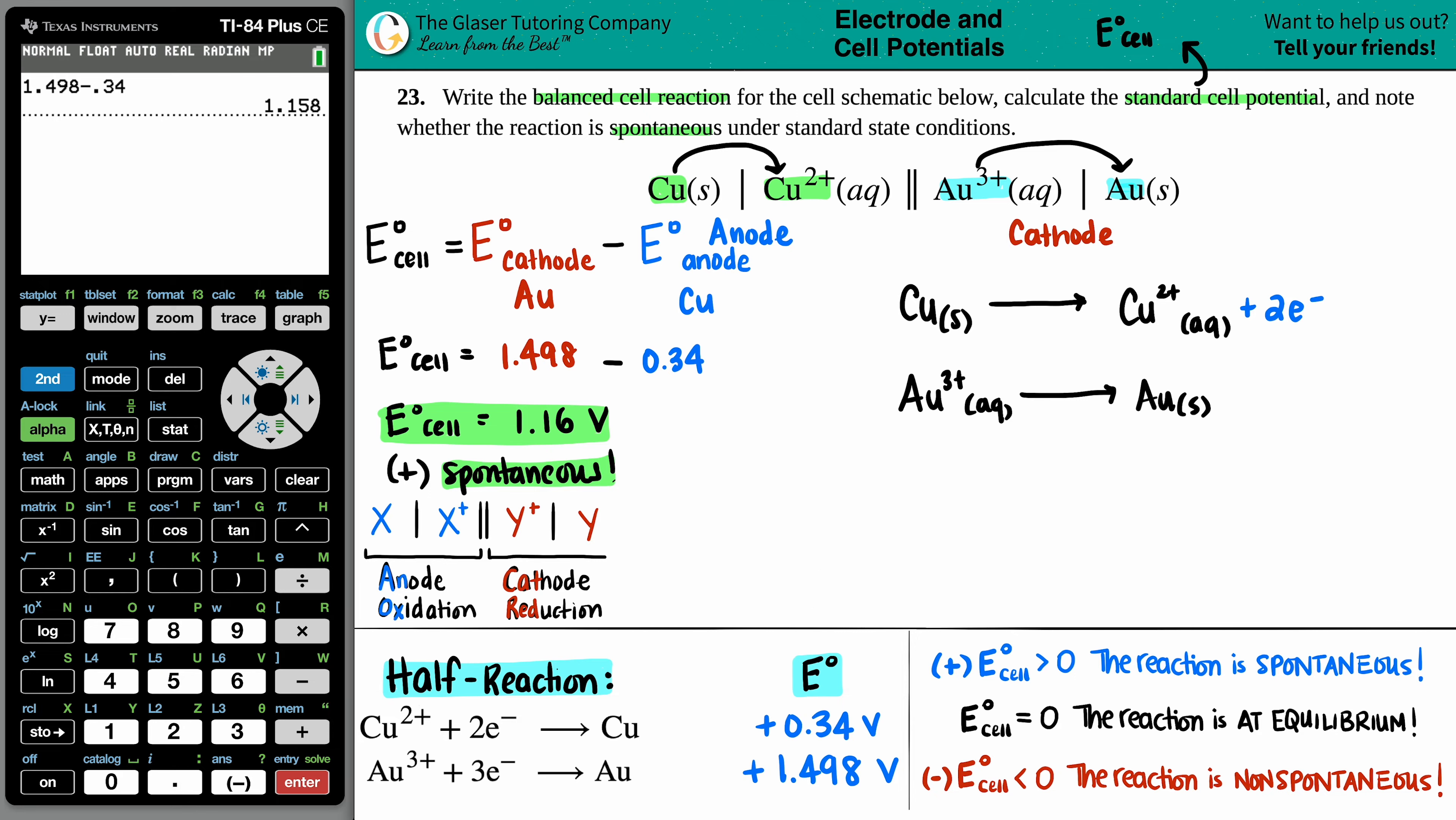Now on the other side, here was a three plus. Here was a zero. You add electrons to the more positive side. And in this case, I'm going to add three electrons.